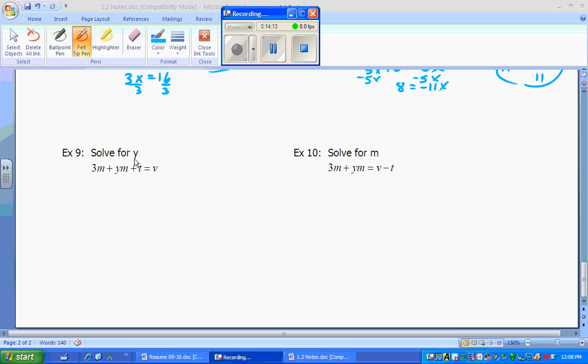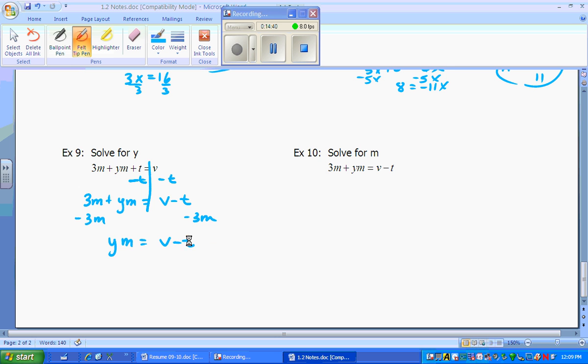Finishing up, we're going to solve for y in this example. So what do we notice? We can minus the t over to the other side. So we get 3m plus ym equals v minus t. We want to get solve for y. So we can minus the 3m over also. So we get ym is equal to v minus t minus 3m. y by itself divided by m. So y is equal to, in our case, v minus t minus 3m over m. And we solved for it.